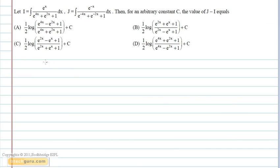Substituting the values of I and J in J minus I, we get J minus I to be integral e power minus x divided by e power minus 4x plus e power minus 2x plus 1, minus e power x divided by e power 4x plus e power 2x plus 1.